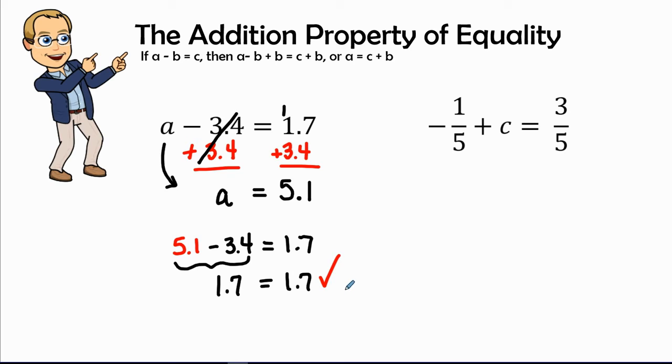Now in the next problem, we have negative one fifth plus c equals three fifths. So we ask, what is attached to the letter c or the variable c? It is attached by a negative one fifth. So the inverse of a negative one fifth is a positive one fifth. So we are going to add both of those together. A negative one fifth and a positive one fifth is an inverse, so it equals zero. So now we have c by ourselves.